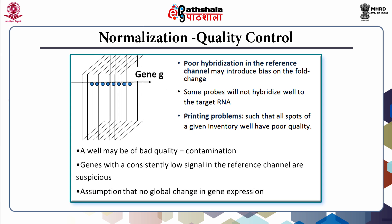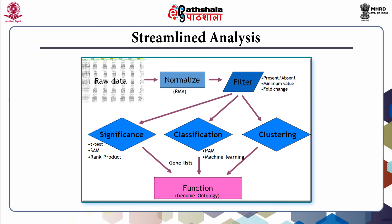Quality amendments include whether to proceed with data analysis at the gene level control, probe level control, and array level control. Normalization corrects for variation in hybridization under the assumption that there is no change in global gene expression. Without normalization, intensity values of various chips would be so varied that generalized information for biological interpretation would not be easily available. The streamlined analysis of microarray data involves processing raw data to normalize, then filtering normalized data sets for significance, classification, and clustering to understand genome function or gene networks for functional and network analysis.